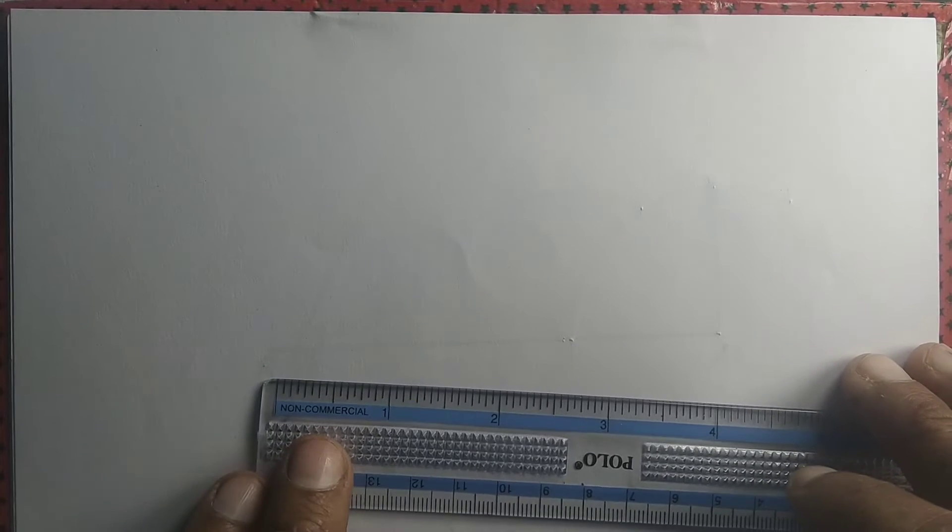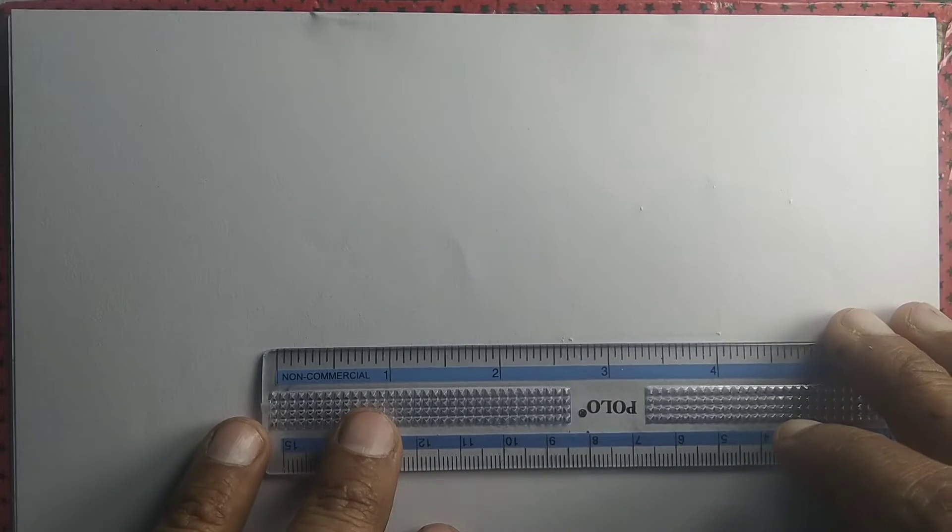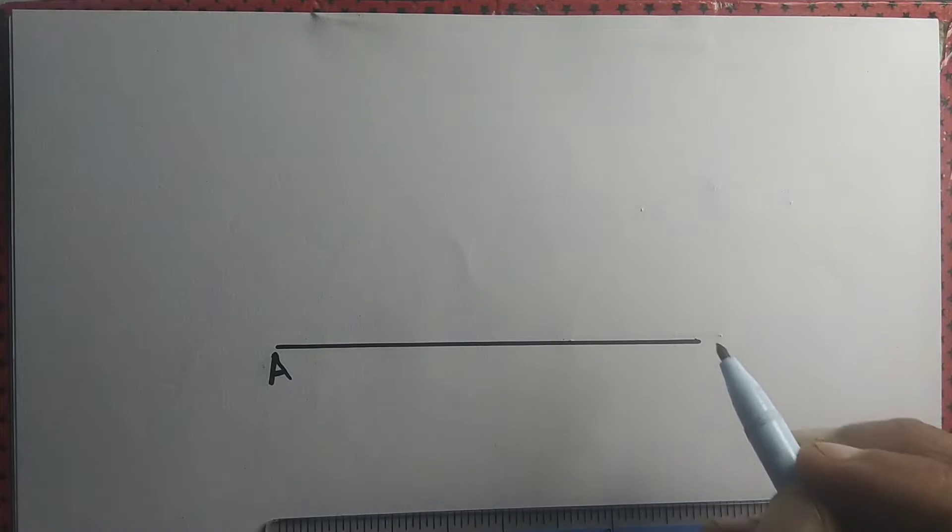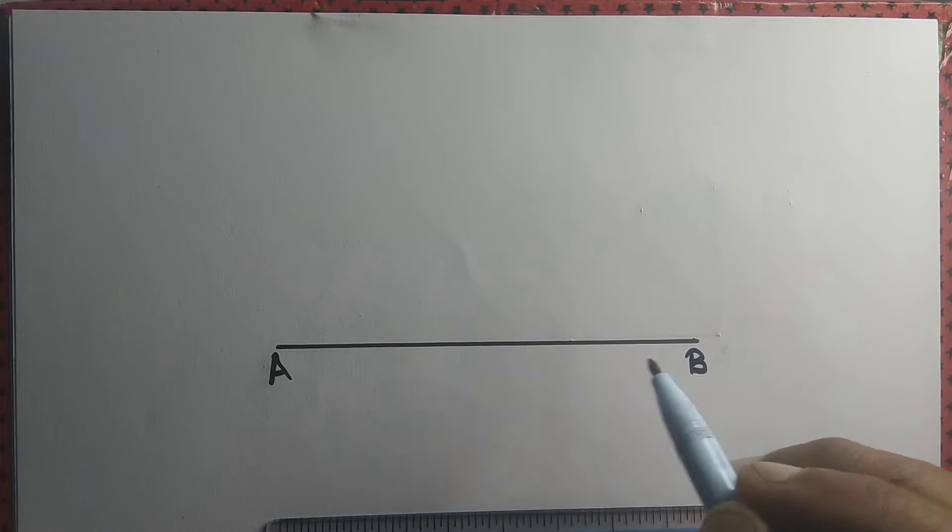Let's draw an angle measuring 45 degrees with the base AB. For that purpose we draw a line segment AB and we want to draw an angle at A measuring 45 degrees.